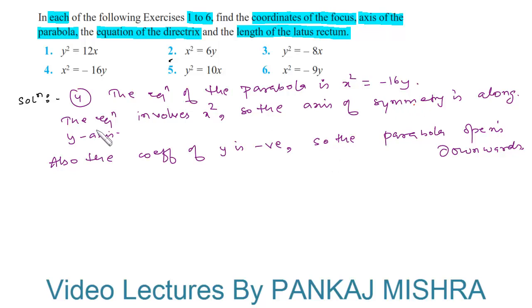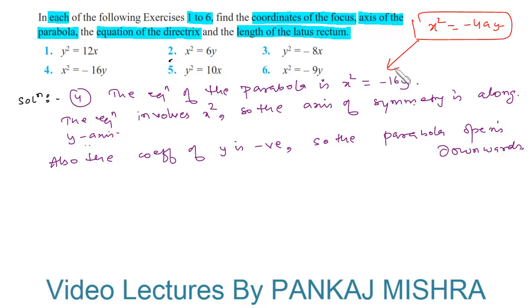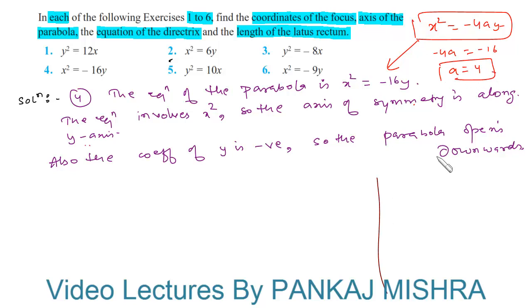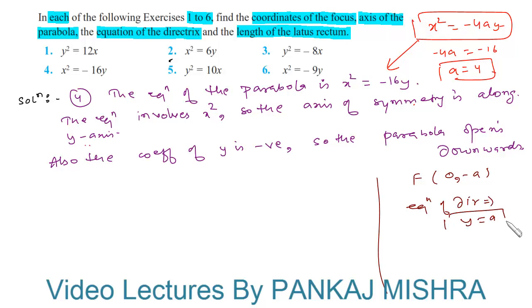The equation of a parabola which is symmetric along the y-axis and opens downwards is given by x² = −4ay. On comparing these two equations, −4a = −16, so a = 4. The focus of such a parabola is at (0, −a), and the equation of the directrix is y = a.